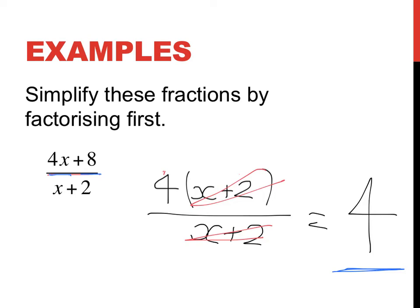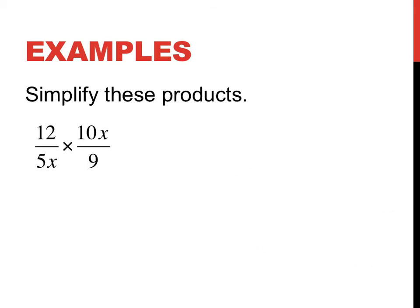That covers simplifying, either by crossing out common factors or by factorising. Now let's look at simplifying products. Remember, product means times, so these are multiplied fractions.